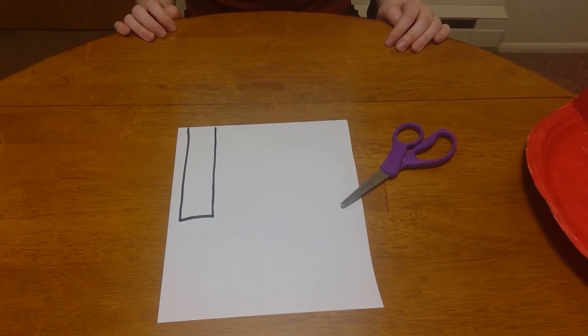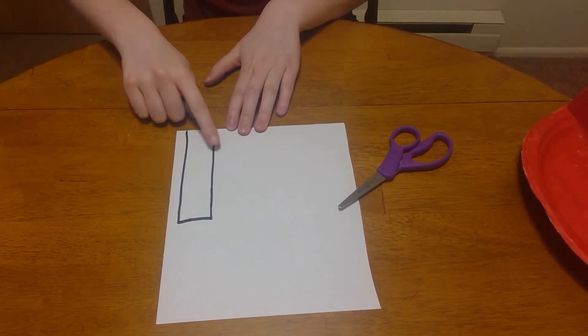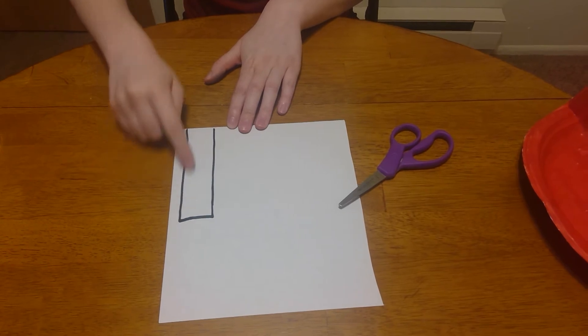For this next step, we're going to make the frog's tongue. So you're going to need to ask an adult to cut out a long, skinny rectangle.